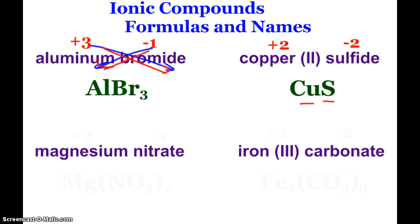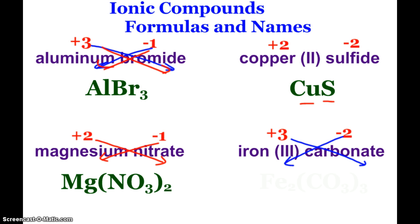So, magnesium nitrate, magnesium in group 2 becomes plus 2, nitrate, a friendly polyatomic ion that we probably know so very well, has a minus 1 charge. So again, two nitrates to go along with one magnesium. Iron 3 carbonate, 3 means iron's plus 3, carbonate, another polyatomic buddy. I'm going to need two of the irons to go along with three of the carbonates, so that will look something like that.